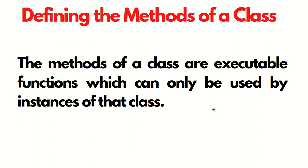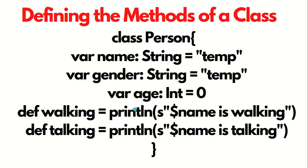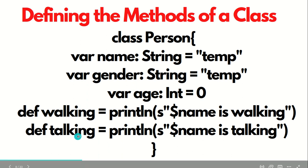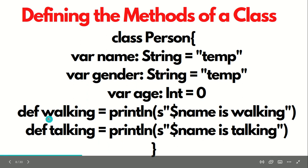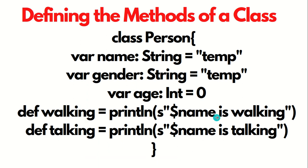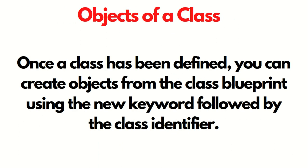How we can define the methods of a class? Methods of a class are the executable functions which can only be used by the instances of that class. Like in this example, we have two methods available: walking and talking. Although these methods are not returning anything, they're just used to print statements. This is how we can define the methods of the class.